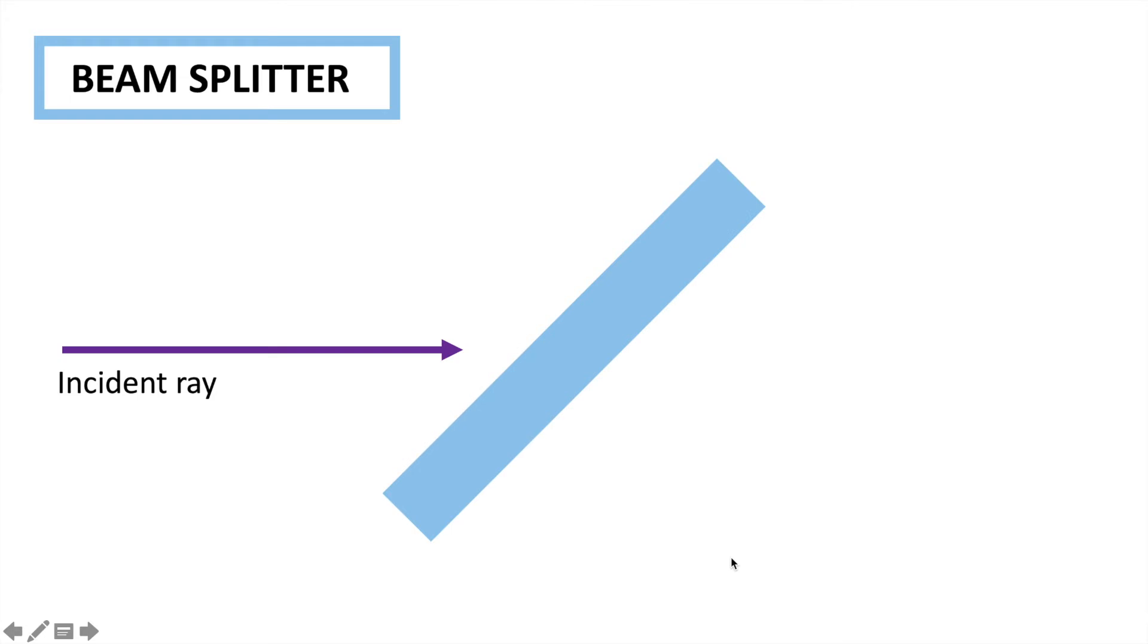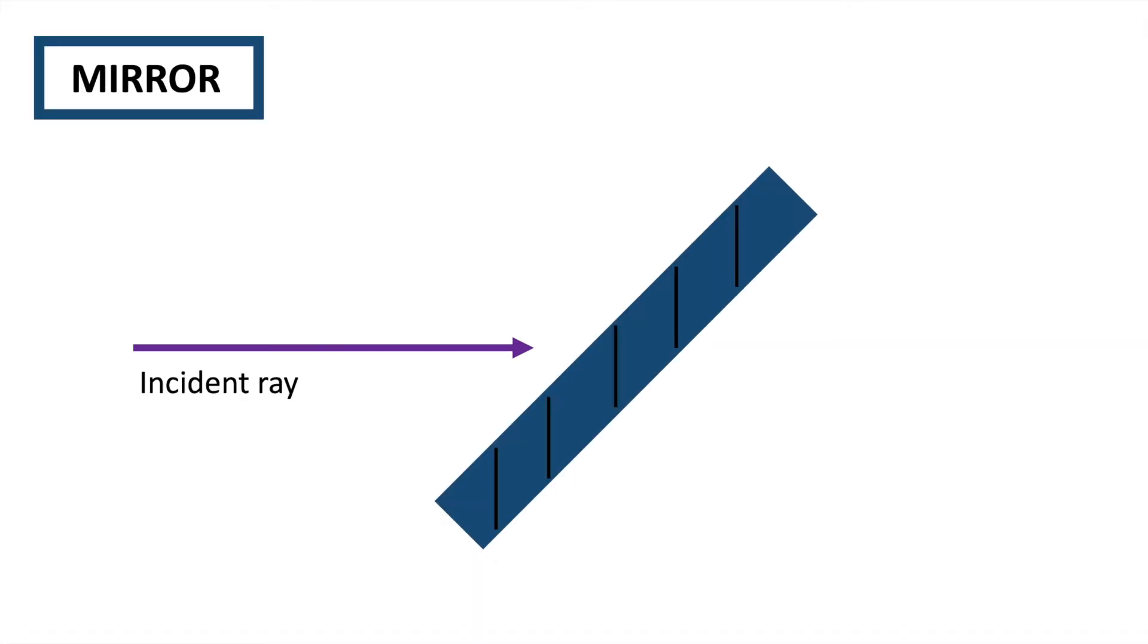Before moving on, it's important to once again clarify what beam splitters do. Beam splitters reflect half of their rays with a phase shift of pi over 4, and they transmit the other half of the ray with a phase shift of 0.